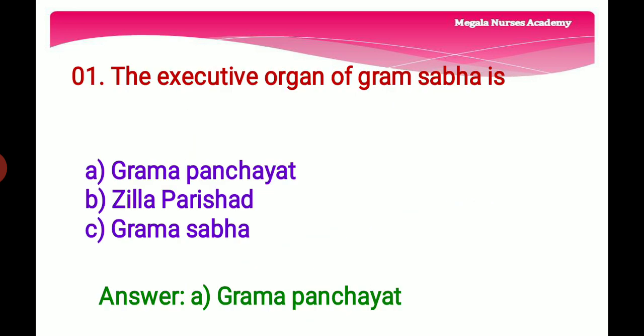First question: The executive organ of Grama Sabha is — Option A: Grama Panjayat, a basic village governing institute and democratic structure at the grassroot level in India. Option B: Jilla Parishat, the executive organ at the district level. Option C: Grama Sabha. The right answer is Option A, Grama Panjayat, because it is the basic village governing institute in Indian villages.